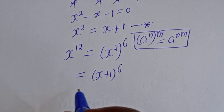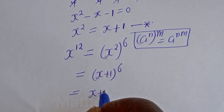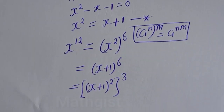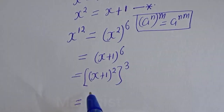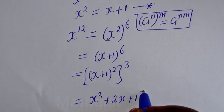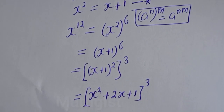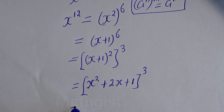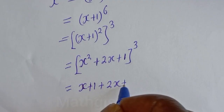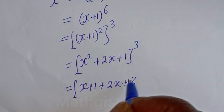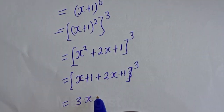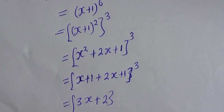Now, (x plus 1) to the power of 6 can be written as ((x plus 1) squared) to the power of 3. Expanding: (x plus 1) squared equals x squared plus 2x plus 1. Substituting x squared equals x plus 1, we get x plus 1 plus 2x plus 1, which is 3x plus 2, all to the power of 3.